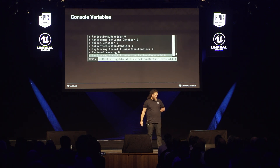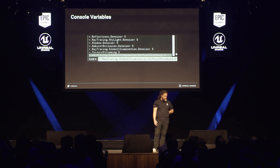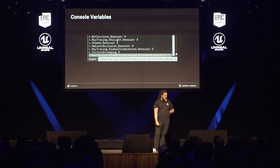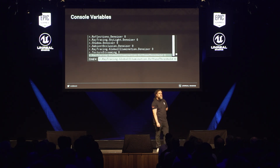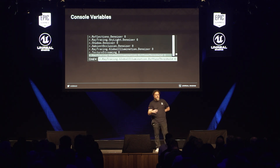There are also some console variables used here. We have the denoisers that can be turned off. We turned off texture streaming for this 8K render to get really high-quality textures. The last important one is the global illumination diffuse threshold, which allows you to render the GI also for really dark parts of the scene.